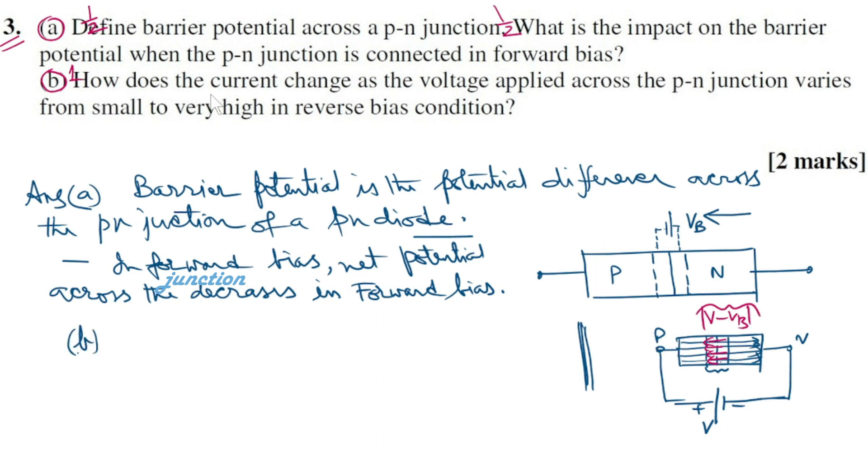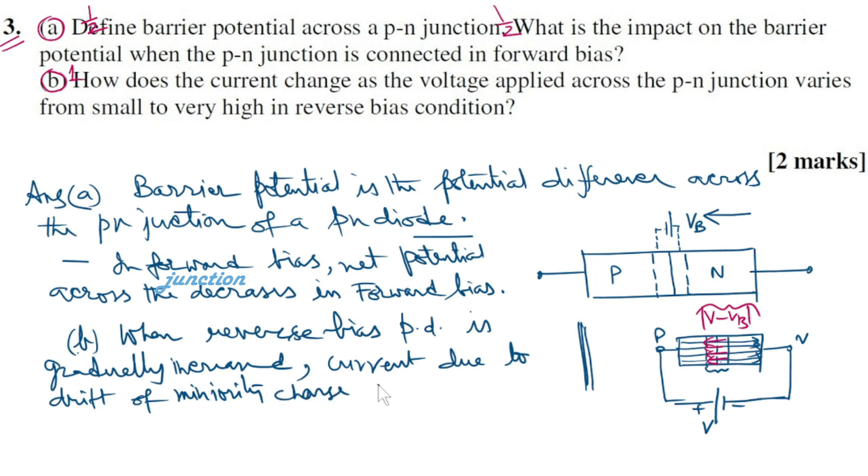Now next part of the question. How does current change as voltage applied across the p-n junction varies from small to very high in reverse bias condition? When reverse bias potential difference is gradually increased, current due to drift of minority charge carriers increases and then becomes constant.